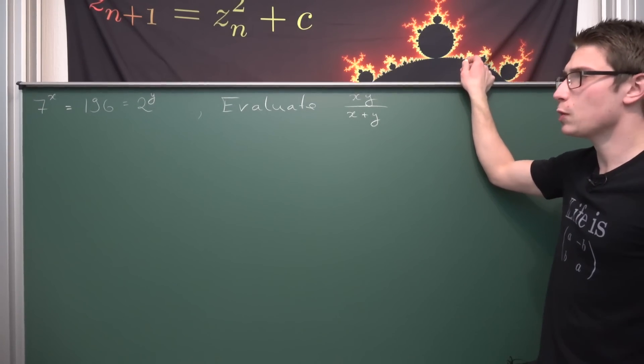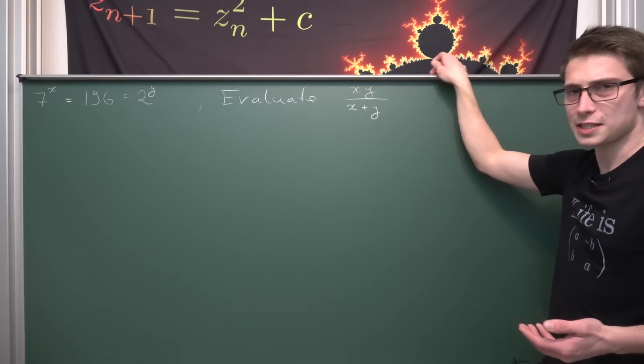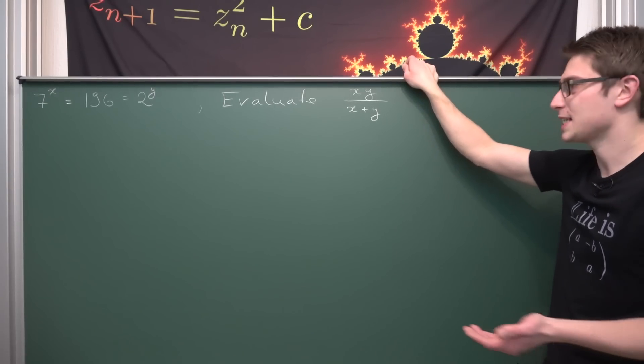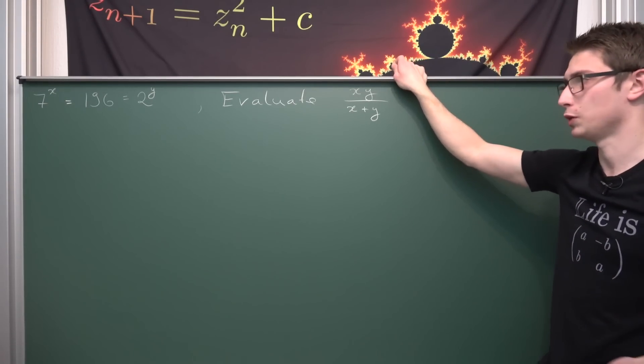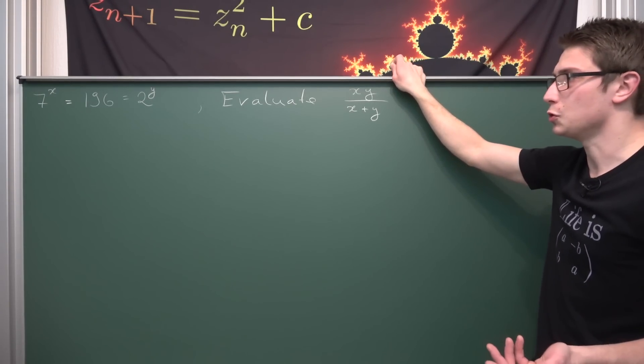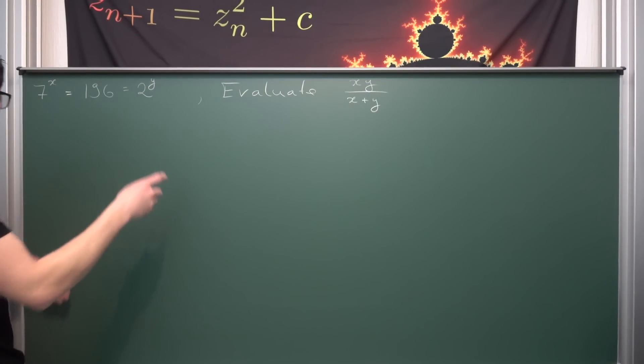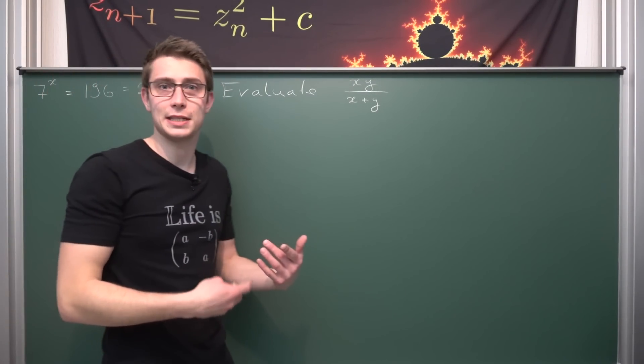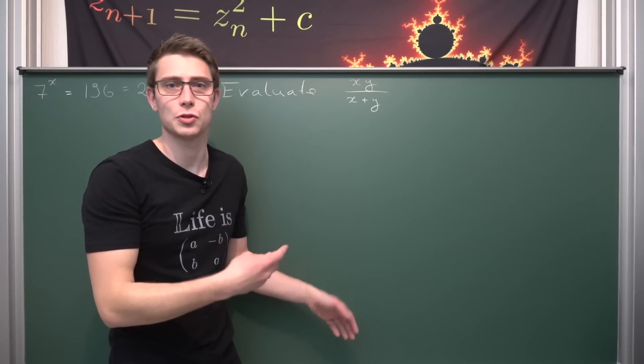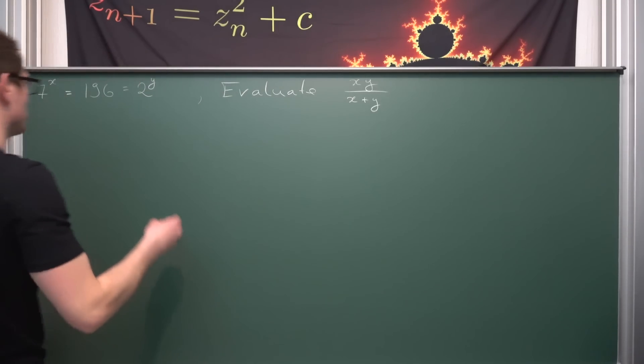First way I did was to just not use logarithms. There's actually an easy way to not use logarithms here. What we are going to do is write out those two equations separately at first and then we are going to take the x root and also the y root respectively.